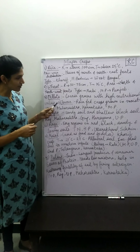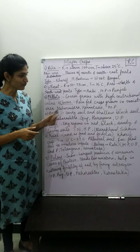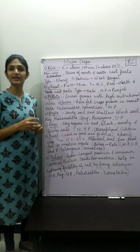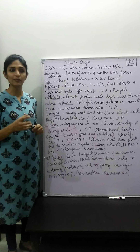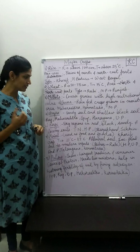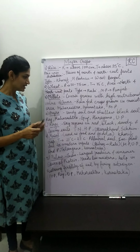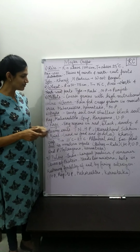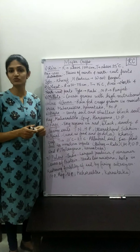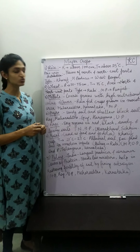First, let's talk about Jowar. Jowar is a rain-fed crop grown in moisture areas — areas where the rain is good and the environment is good. State-wise, Jowar is grown in Maharashtra, Karnataka, and Madhya Pradesh.